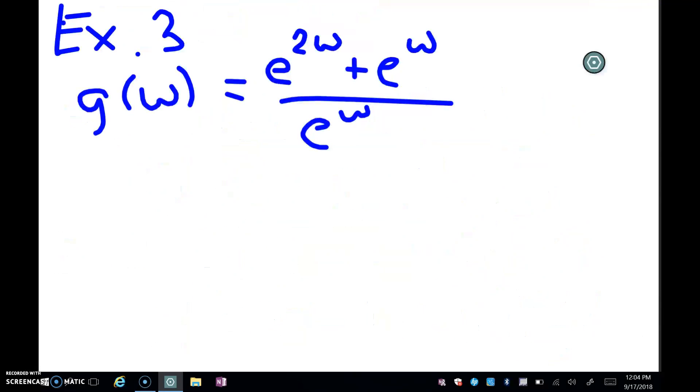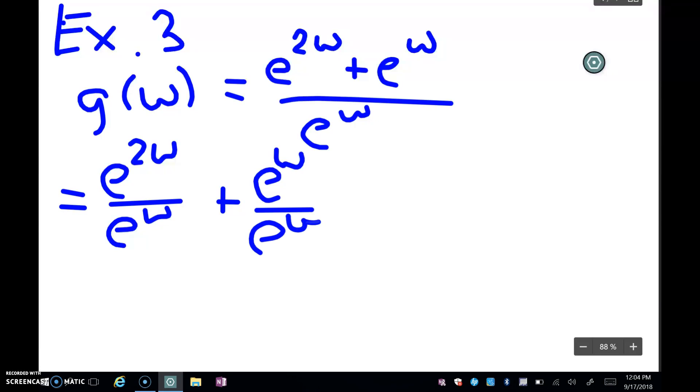Sorry, y'all. I had one more I wanted to show you. This one is not in the proper form because it's division. So remember that we do these by splitting up the denominator. So I'm going to write this as e^(2w) over the denominator, e^w, and then plus e^w from the numerator divided by the denominator, e^w.